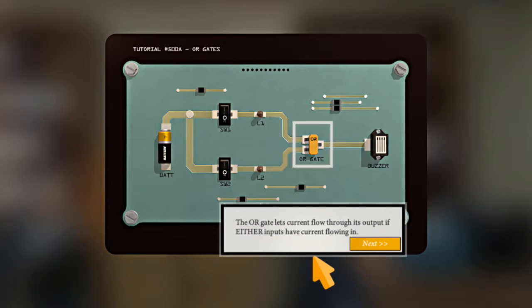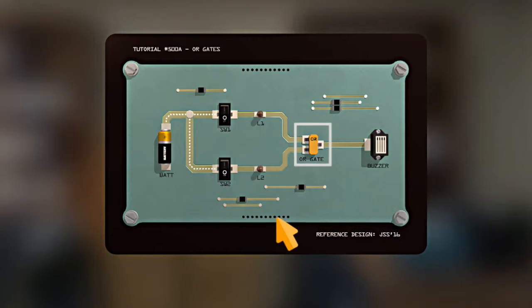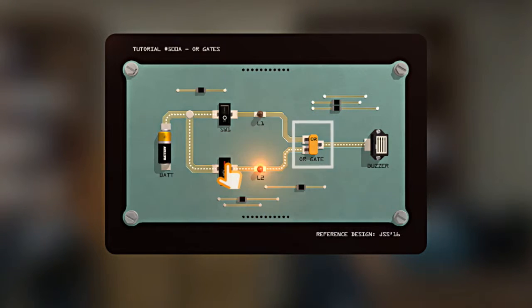Yeah, the OR gate lets current flow through its outputs if either inputs have current flowing in. Try for yourself here. Try yourself, yeah. Without your help, I'm just going like okay, one. And that's the buzzer, that's it. Yeah that's it, yeah. Okay, so I switched the other one.